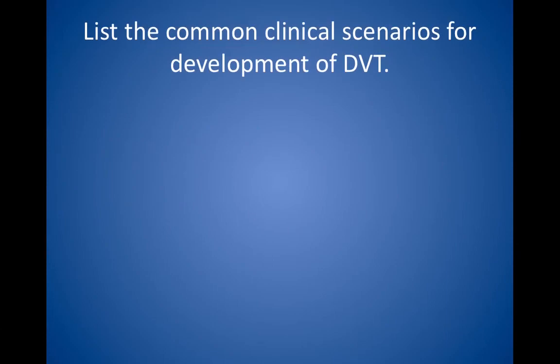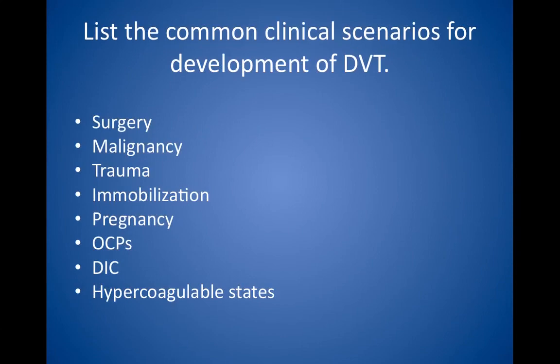List the common clinical scenarios for development of DVT. Surgery, especially orthopedic, pelvic, abdominal, or neurosurgery. Malignancy. Trauma. Immobilization. Pregnancy. The use of birth control pills. Disseminated intravascular coagulation. And hypercoagulable states, such as factor V Leiden, antithrombin 3 deficiency, protein C deficiency, protein S deficiency, prothrombin G20210A gene mutation, hyperhomocysteinemia, or antiphospholipid antibodies.